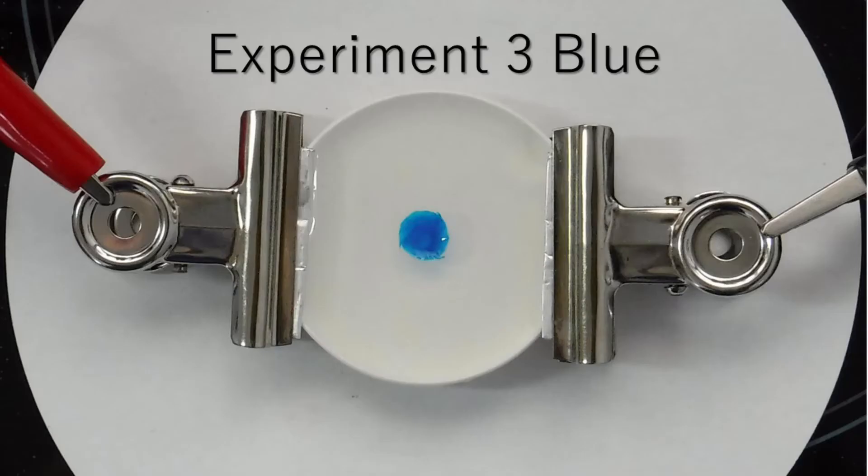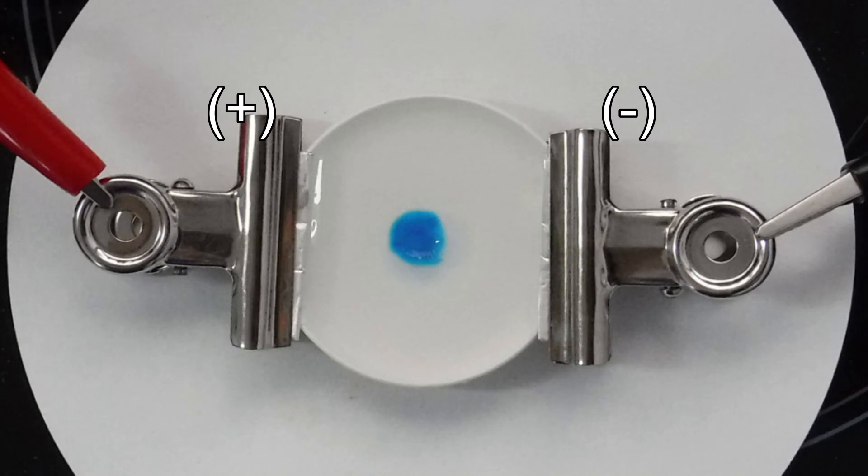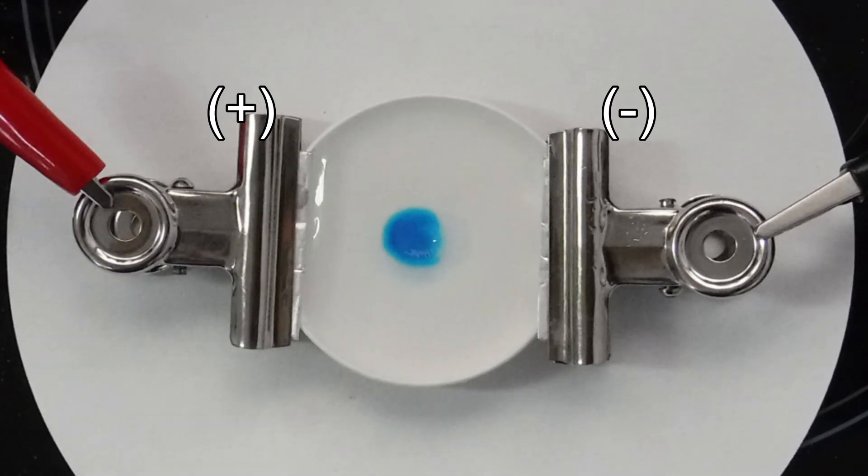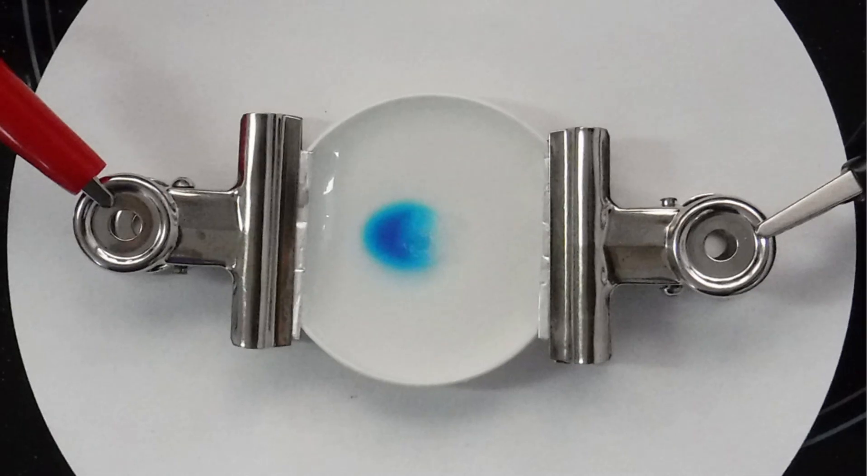The third experiment is blue color. The moving speed of blue is slow.